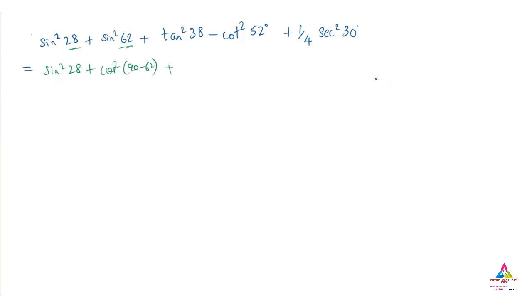So it is tan square 38 degree minus cot square, what we have, that I can write as tan square 90 minus 52 degree, and plus one by four secant square 30 degree.